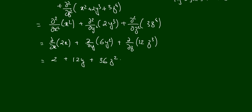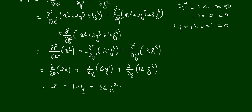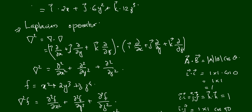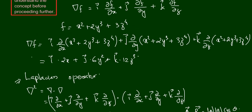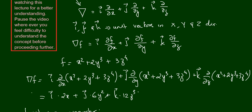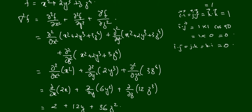Now you understand what is meant by the del operator and the Laplacian operator, and how to apply them to a function. This is very important in quantum mechanics, and you will see why when we deal with quantum mechanical systems using the Schrödinger equation for microscopic systems. If you have any doubts, please don't hesitate to ask. Thank you for watching, and stay tuned.